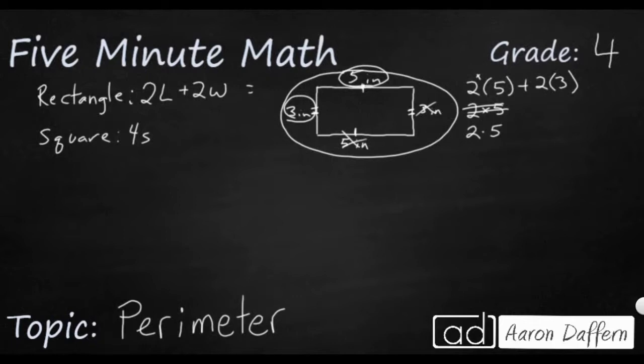And so if we wanted to double the width, we might see it like this. We might see 2 and then dot 3. Sometimes you'll see parentheses, sometimes you won't. And so the 2 times 5 is going to make 10 and the 2 times 3 is going to make 6. So you're going to add the 10 and 6 and you're going to get 16, and then we'll need our units inches.